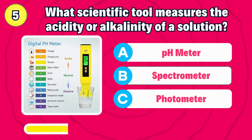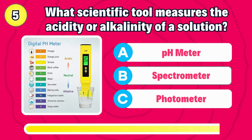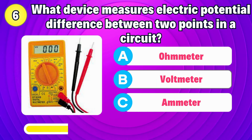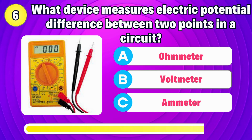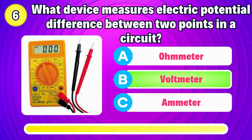What scientific tool measures the acidity or alkalinity of a solution? Correct, it's a pH meter. What device measures electric potential difference between two points in the circuit? The answer is voltmeter.